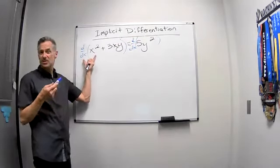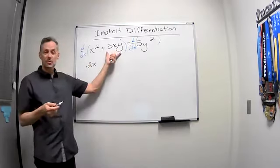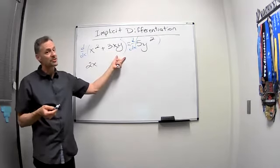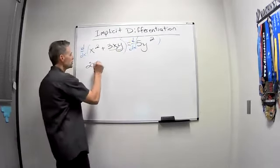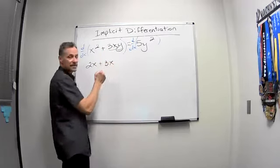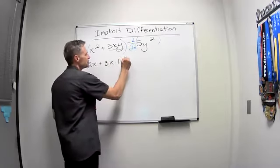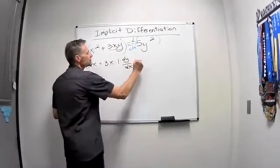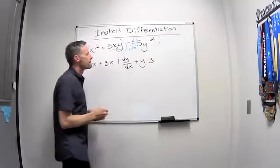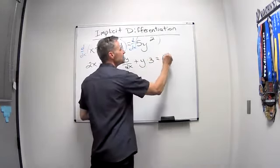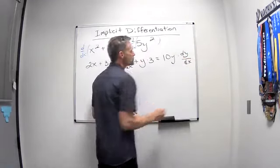And again, take the derivative of the x squared. Again, just 2x. Here's a little trouble, though. This 3xy, I've got a 3x times y. I have to use the product rule. So I'm thinking of the 3x times the y. So when I do the product rule, it's going to be the first 3x times the derivative of y. Well, the derivative of y is just 1, but from the chain rule, times dy/dx. Plus the second times the derivative of the first. The derivative of 3x is just 3. And then on the right side, I get 10y but times dy/dx.